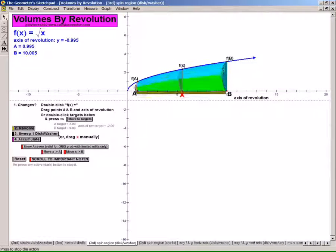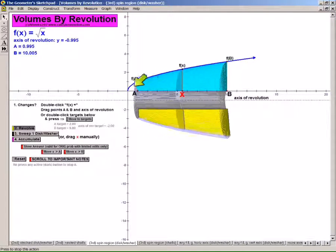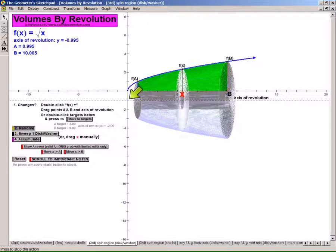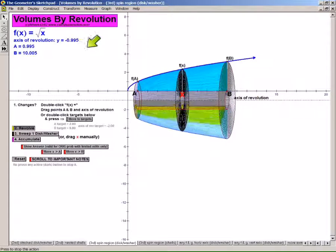Alright, so let's revolve this thing so we can see what it looks like. We revolve this around the y equals negative 1 axis. I know it says negative 0.9, but we're going to pretend it says 1. It makes this shape.